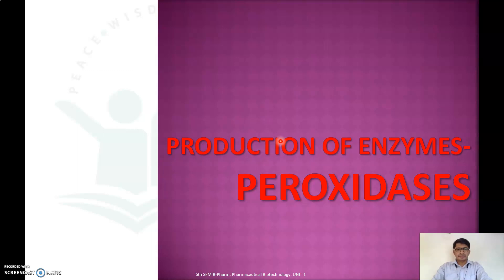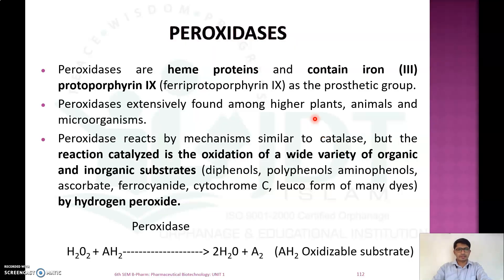In this video we will discuss the production of the enzyme peroxidase. Peroxidases are heme proteins and they contain iron(III) protoporphyrin iron as prosthetic groups. This enzyme is mainly found in higher plants, animals, and some microorganisms.